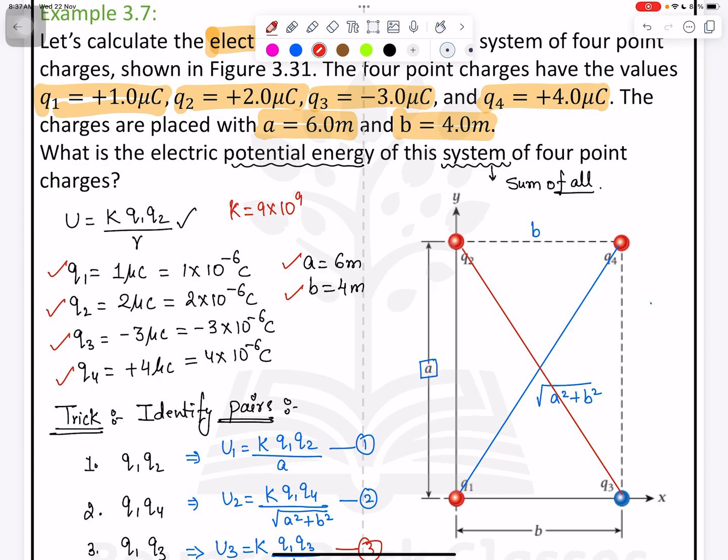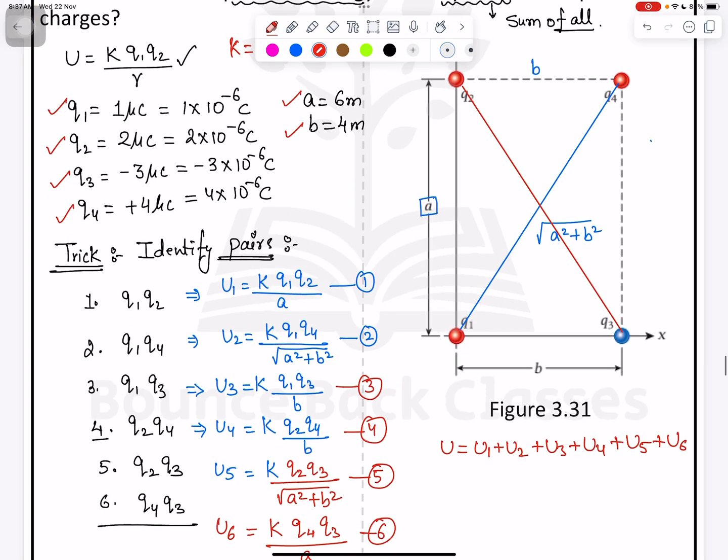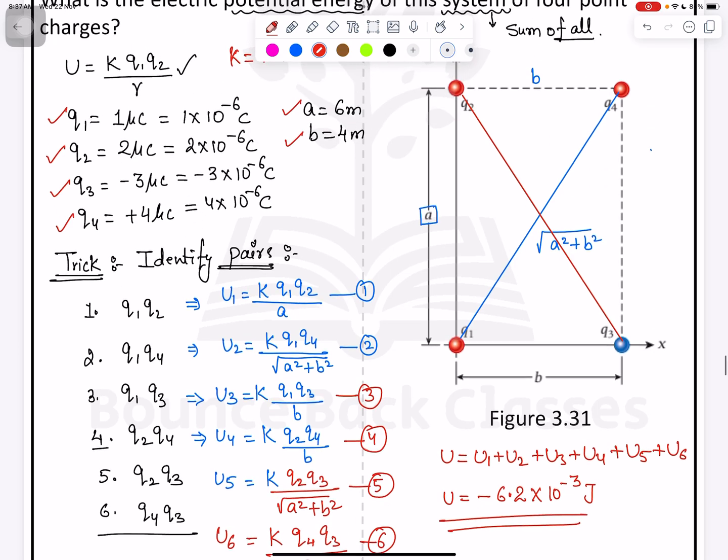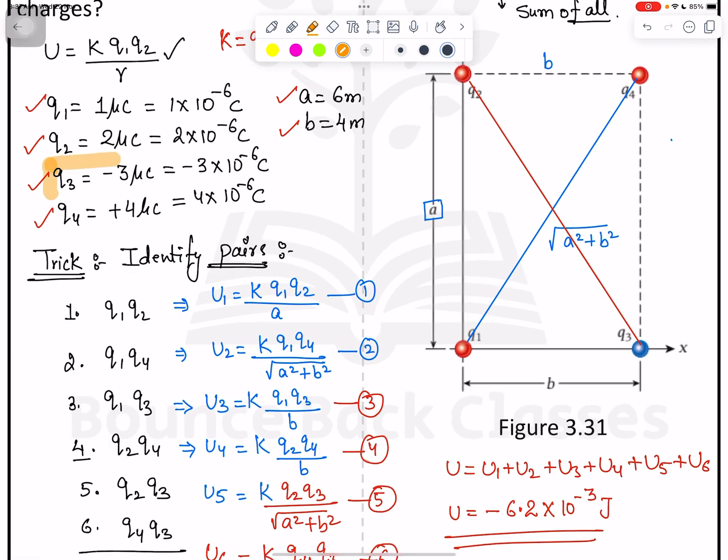Once you solve this with their sign, because we have Q3 is negative, once you solve it you will get U equals negative 6.2 times 10 to the power negative 3 Joules. Just remember, just focus this point. This is the key point of this question because Q3 is negative. Just consider the sign and put all the values.